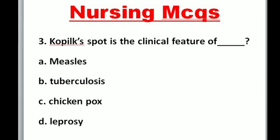Question 3: Koplik spot is the clinical feature of — A. Measles, B. Tuberculosis, C. Chicken pox, D. Leprosy. Correct option is A: Measles.